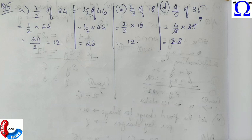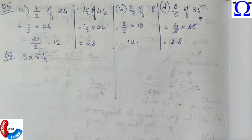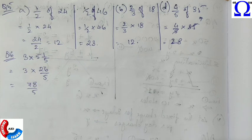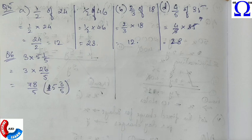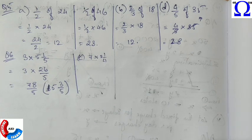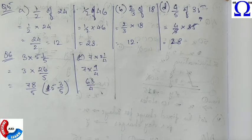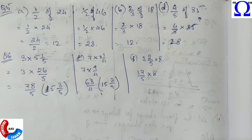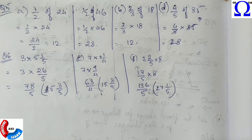Now a fraction is multiplied with mixed fraction. Simply convert it into improper fraction. We can do the same process like we have done before. So this is the required answer. Let's do one more: multiplying numerator with the numerator and denominator with denominator. So 27 and 1 by 5 is the required answer.